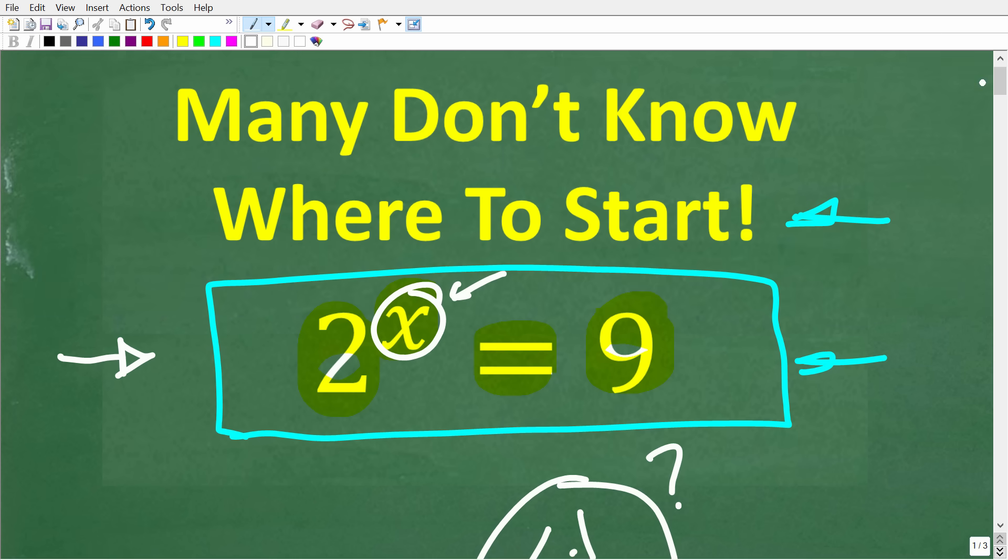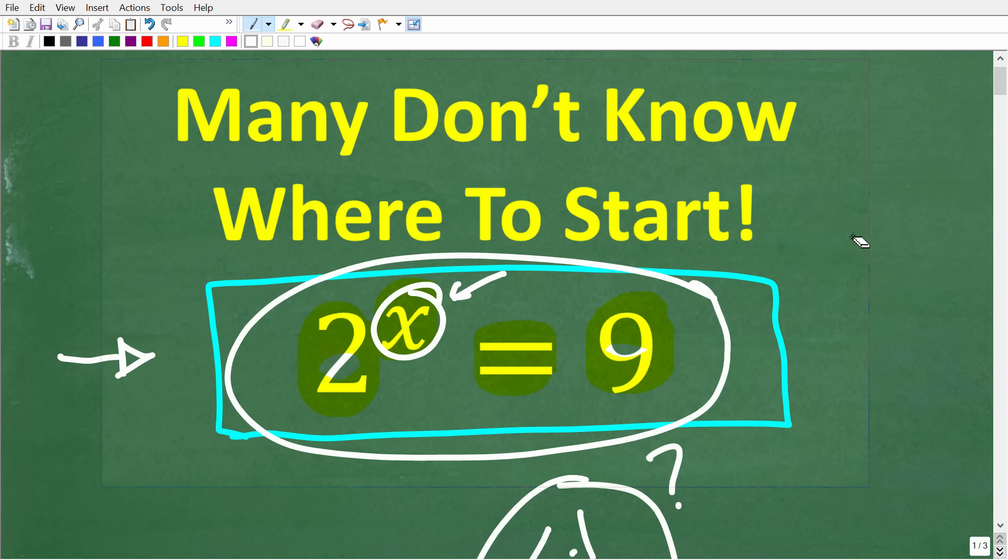I mean, we only have 2 to the x power, and this is equal to 9. This is not like this equation right here. 2 times x is equal to 9. This is simple algebra, and this is far more interesting. Matter of fact, let's go ahead and see exactly how to solve this equation right now.